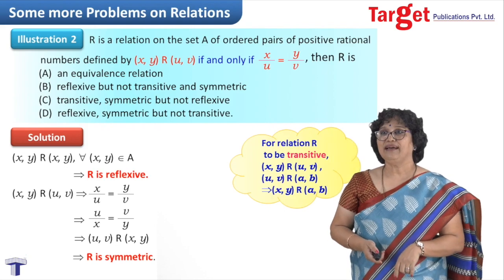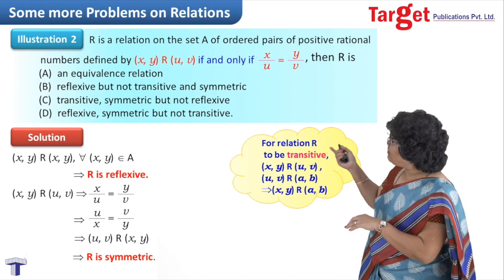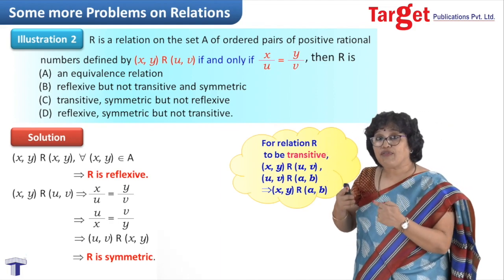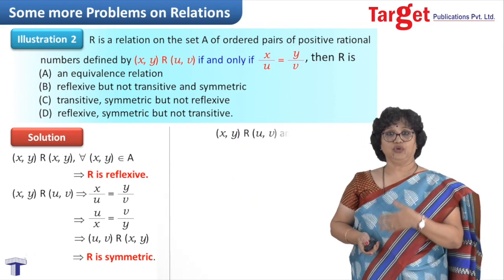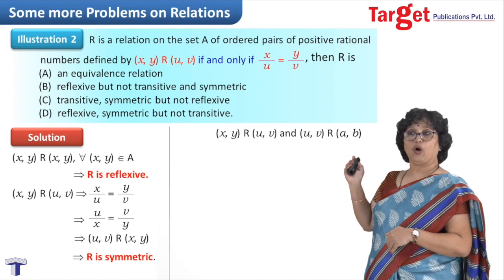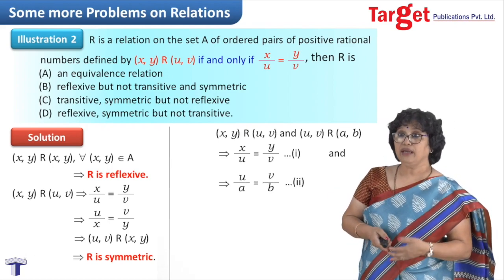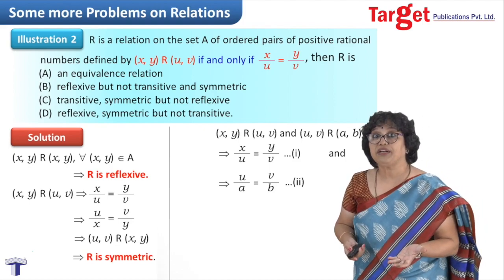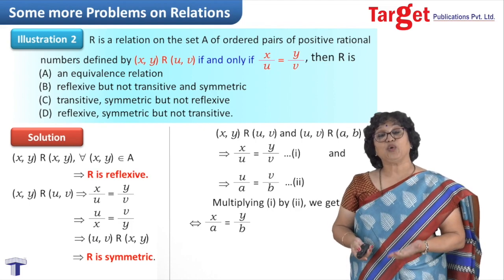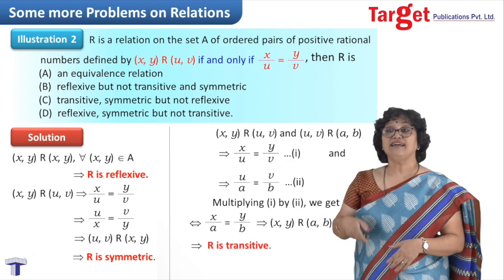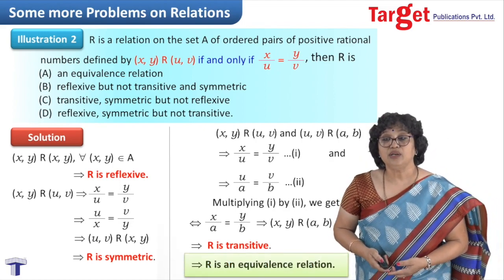For transitive, we take three pairs: (x, y), (u, v), and (a, b). Assuming (x, y) related to (u, v) gives x/u = y/v, and (u, v) related to (a, b) gives u/a = v/b. Multiplying these two equations gives x/a = y/b, which means (x, y) is related to (a, b). So the relation is transitive. Since it is reflexive, symmetric, and transitive, it is an equivalence relation. The correct option is A.